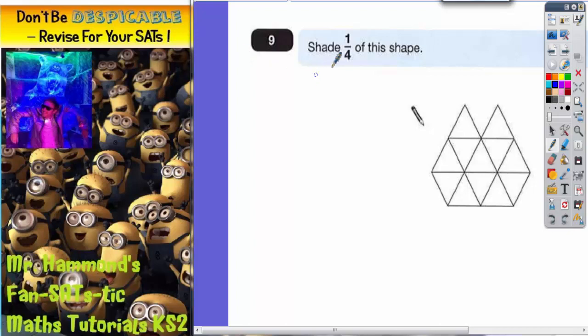Question 9: shading a quarter of this shape. Now we can't just go launching in here and shading a quarter because it's quite a complicated looking shape. So what we need to do is count how many triangles we're actually dealing with.